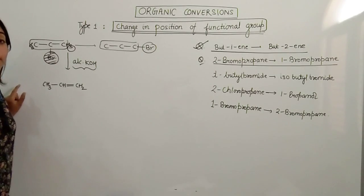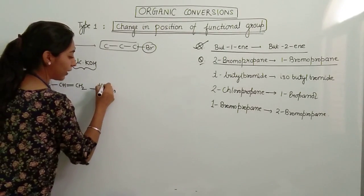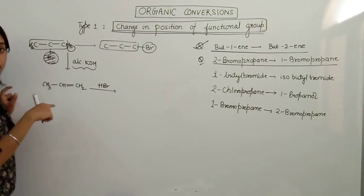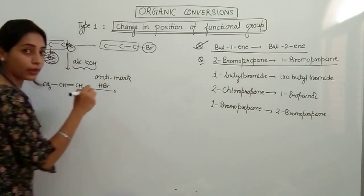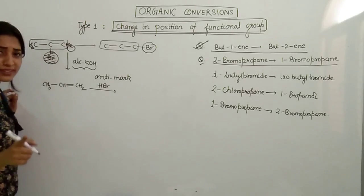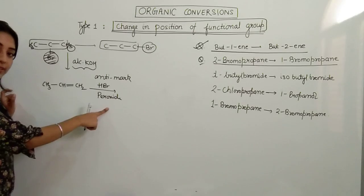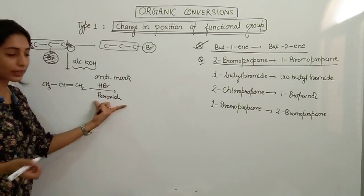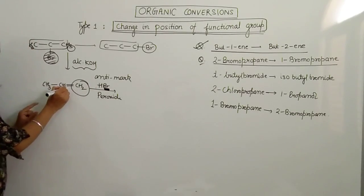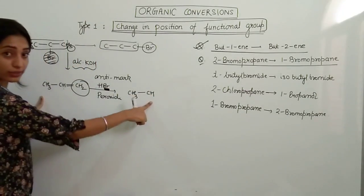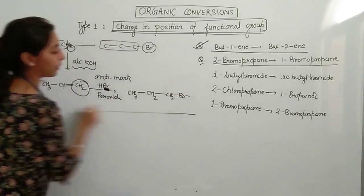Now I have to introduce one another functional group which is Br. But you have to remember, earlier we had to introduce Br at the center position, so I added HBr which is Markovnikov's addition. But this time I want Br to go at the side. So we have to do anti-Markovnikov's addition. Now what are the reagents for anti-Markovnikov's addition? The reagent is peroxide. So you just have to do HBr in the presence of peroxide.